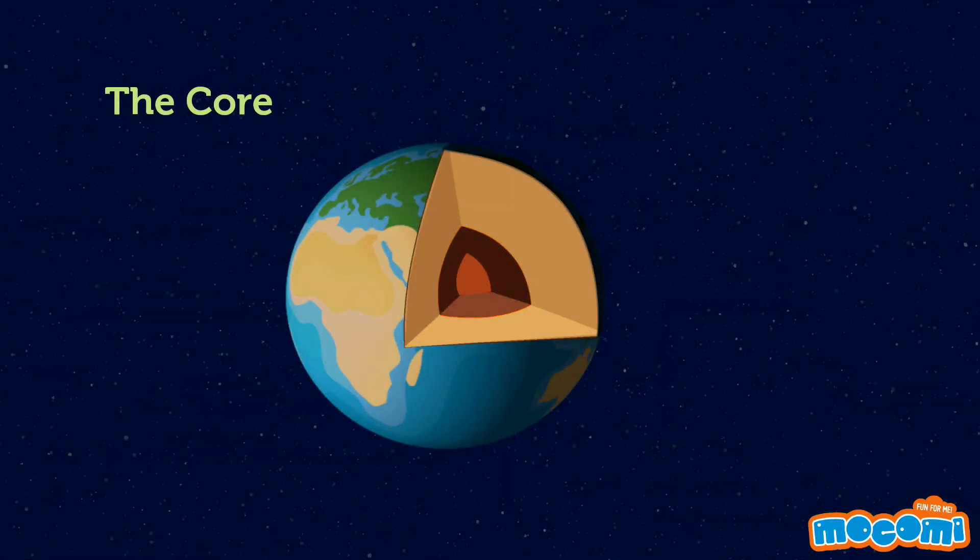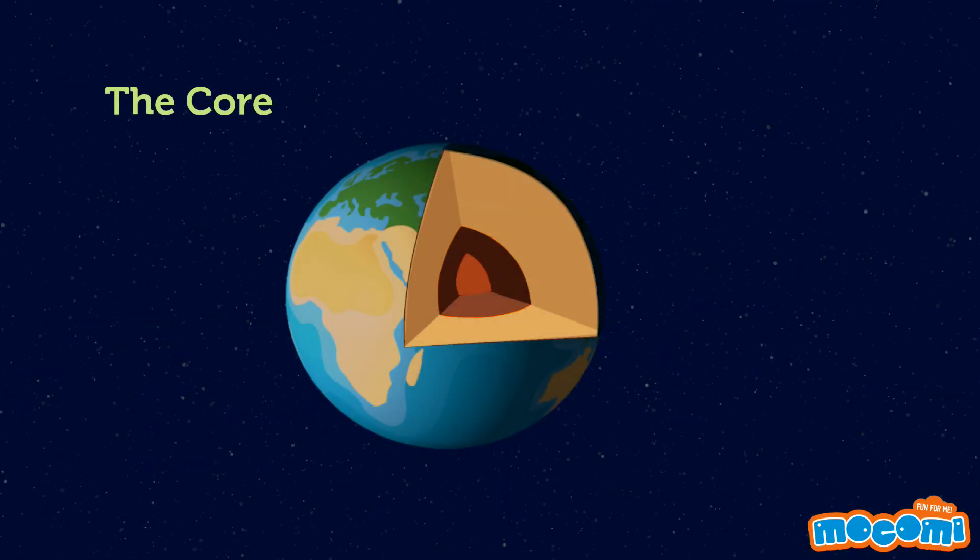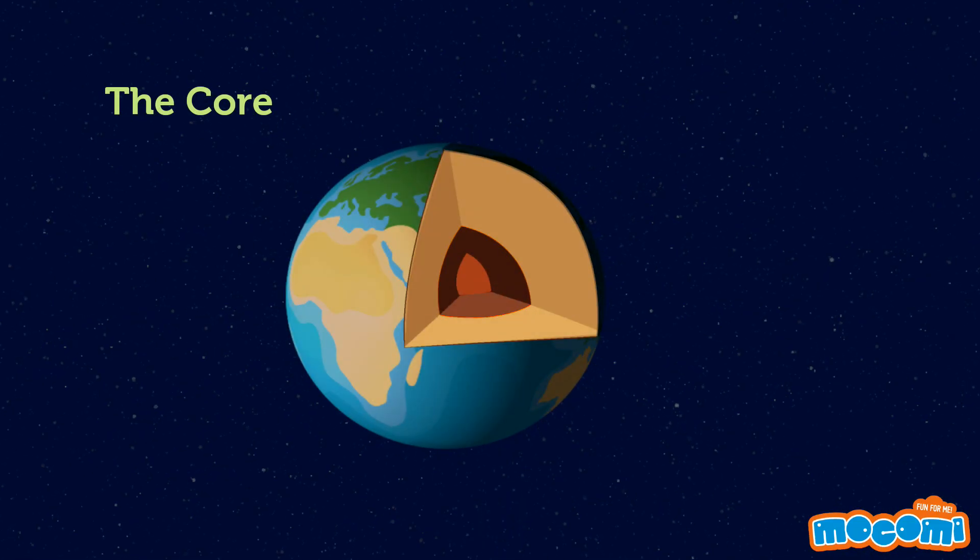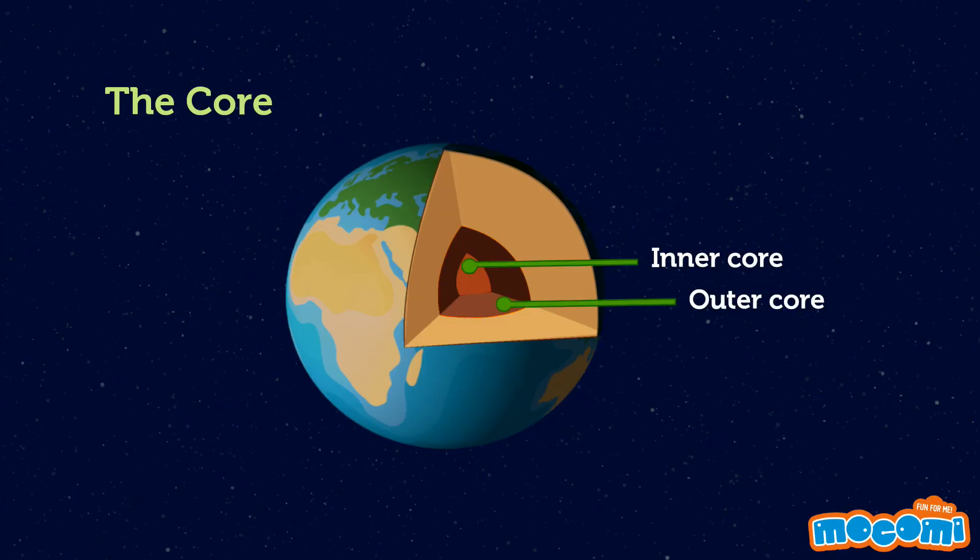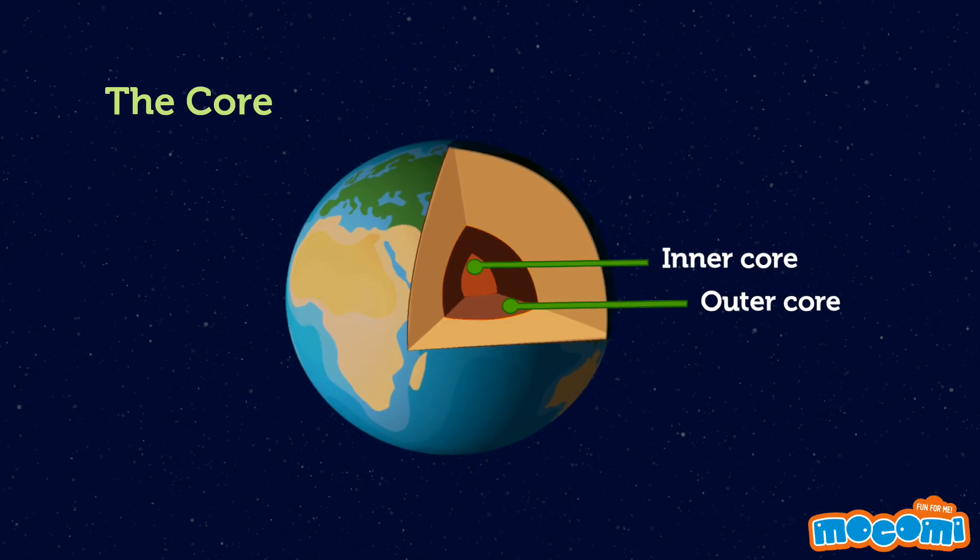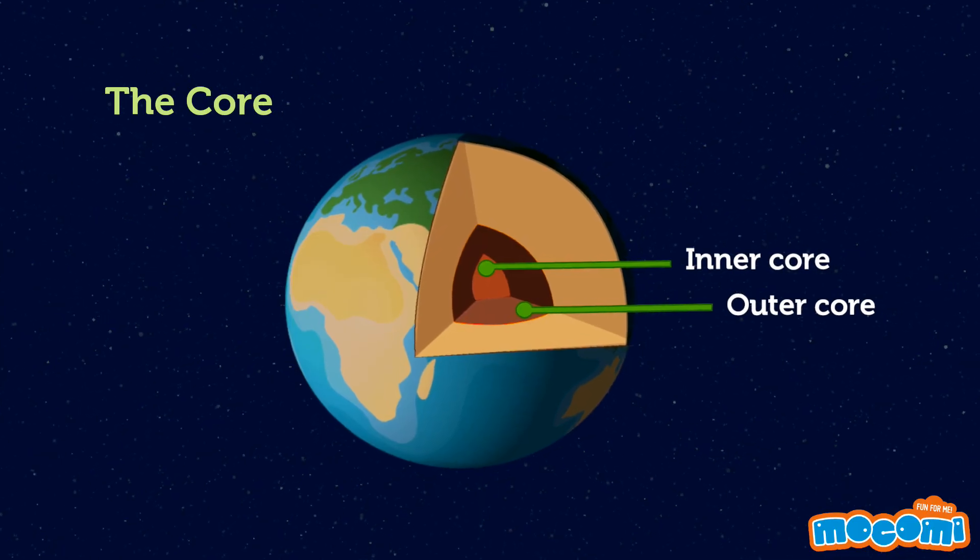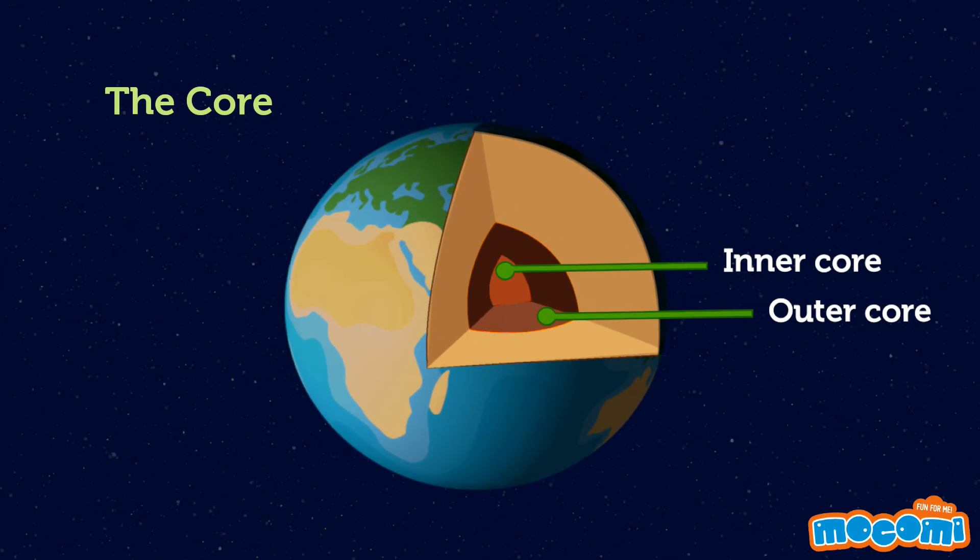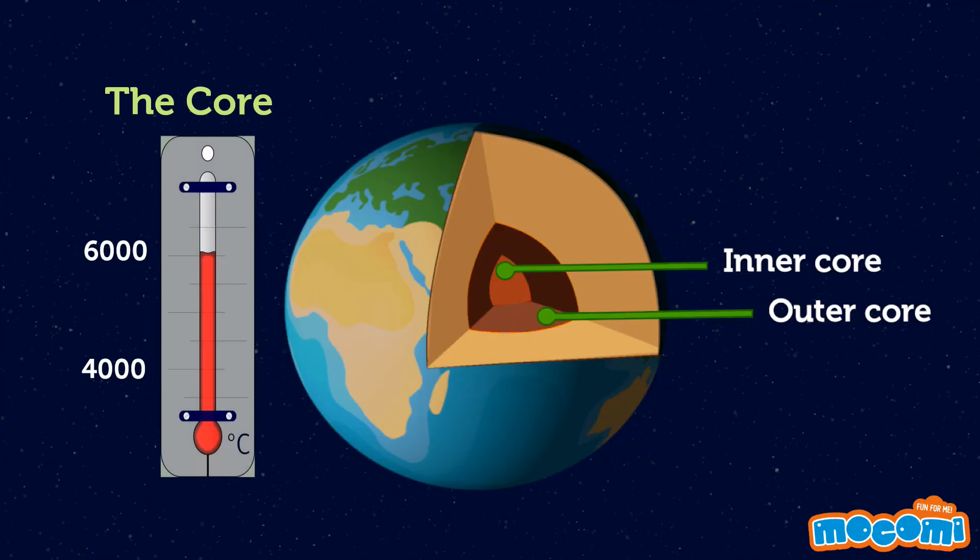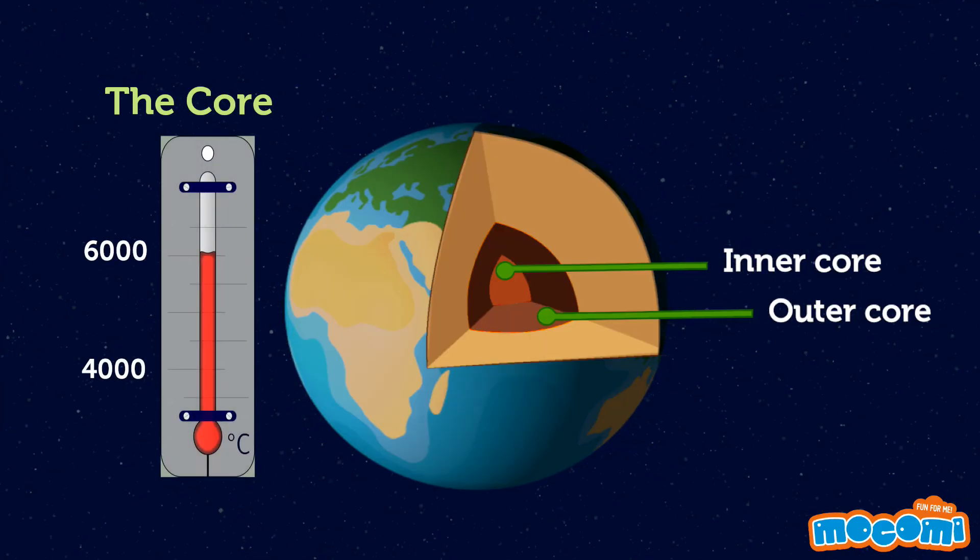The Earth's core is mostly made up of iron. The core is divided into two parts, the inner core and the outer core. Scientists strongly feel that the inner core is solid while the outer core is in a liquid state. An estimate of the core's temperature ranges from 4,000 to 6,000 degrees Celsius.